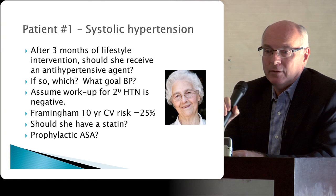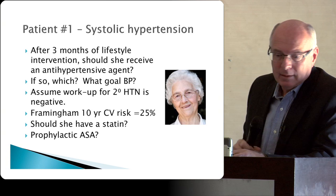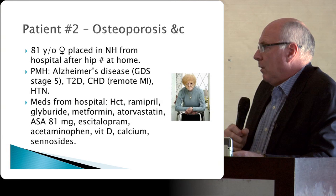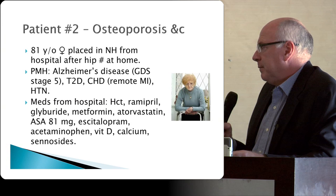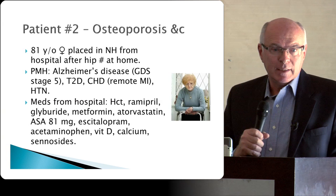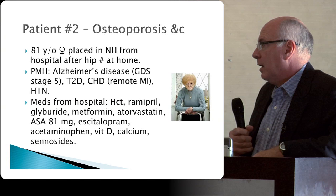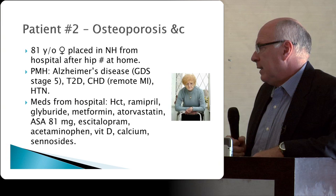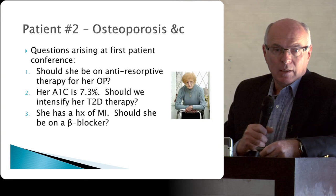What would be her blood pressure goal? You've done a Framingham score and find her score is 25% ten-year risk of hard coronary events — should she have a statin and prophylactic ASA? Patient two: an 81-year-old lady with Alzheimer's disease, type 2 diabetes, coronary heart disease with a remote MI, and hypertension. She fell at home, broke her hip, and has been placed in a care facility. At the first patient care conference, her medications include hydrochlorothiazide, ramipril, glyburide, metformin, atorvastatin, aspirin, escitalopram, acetaminophen, vitamin D, calcium, and sennosides.